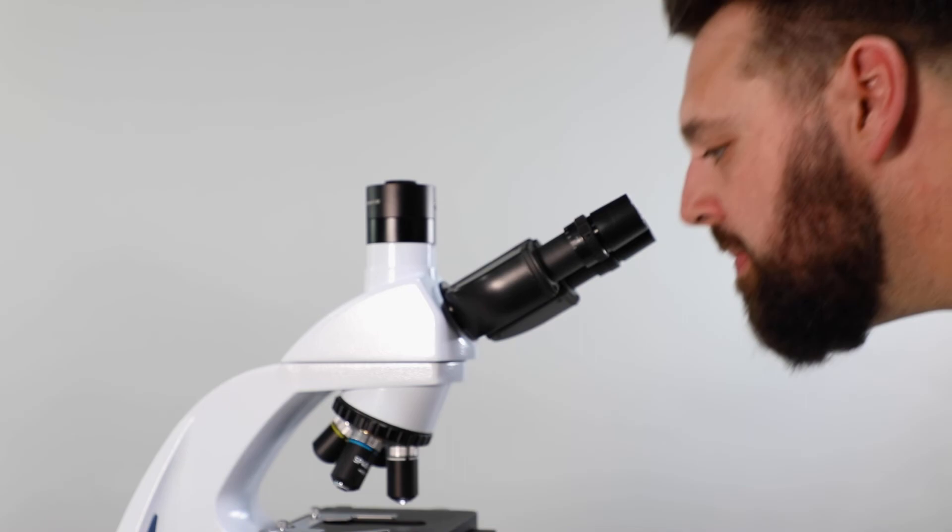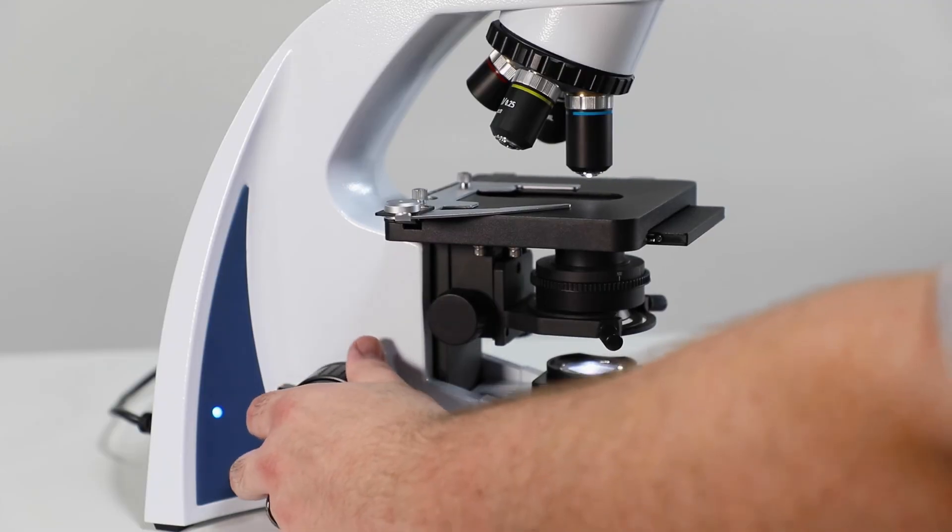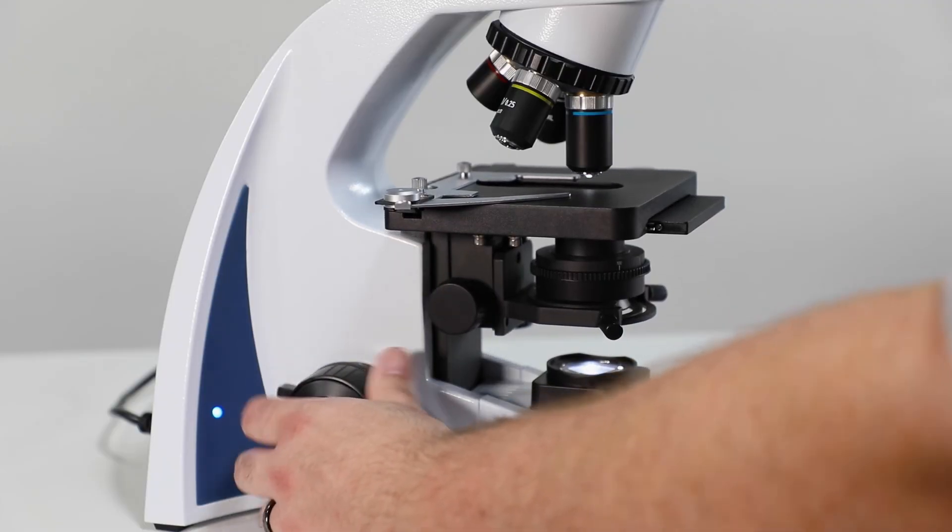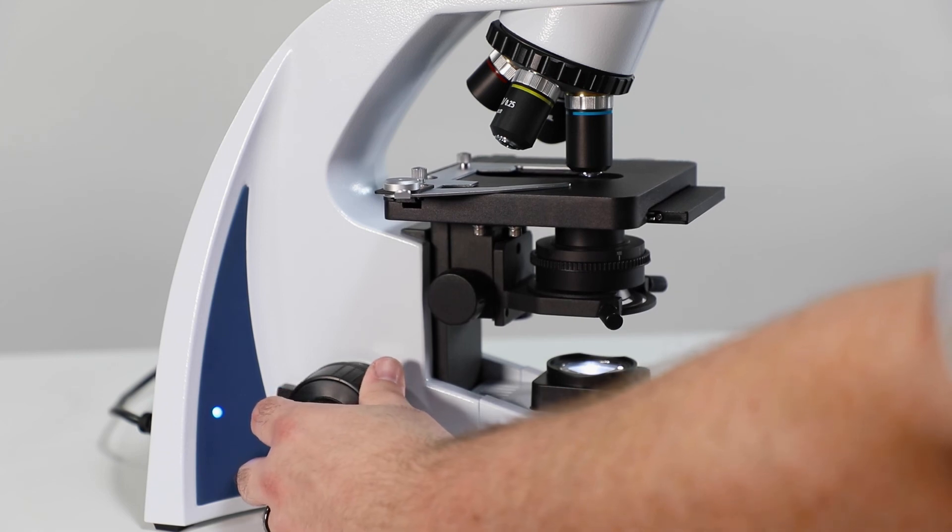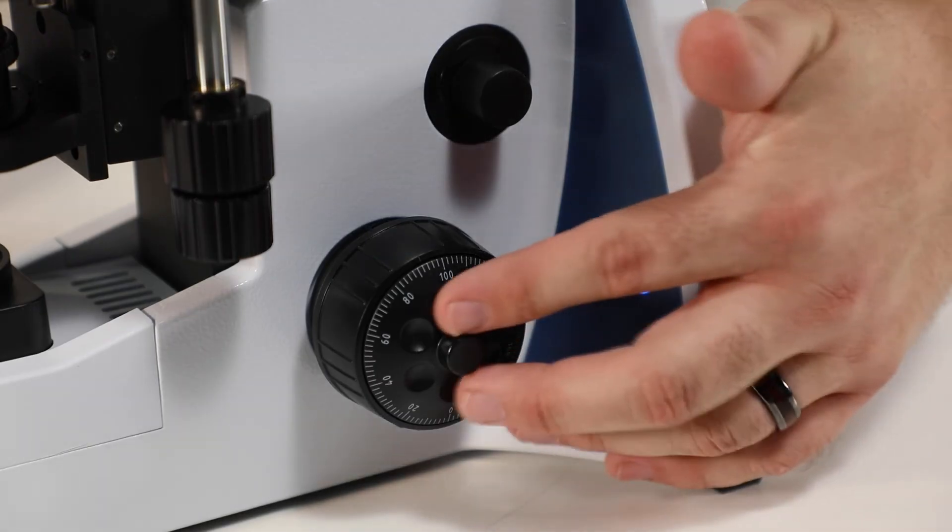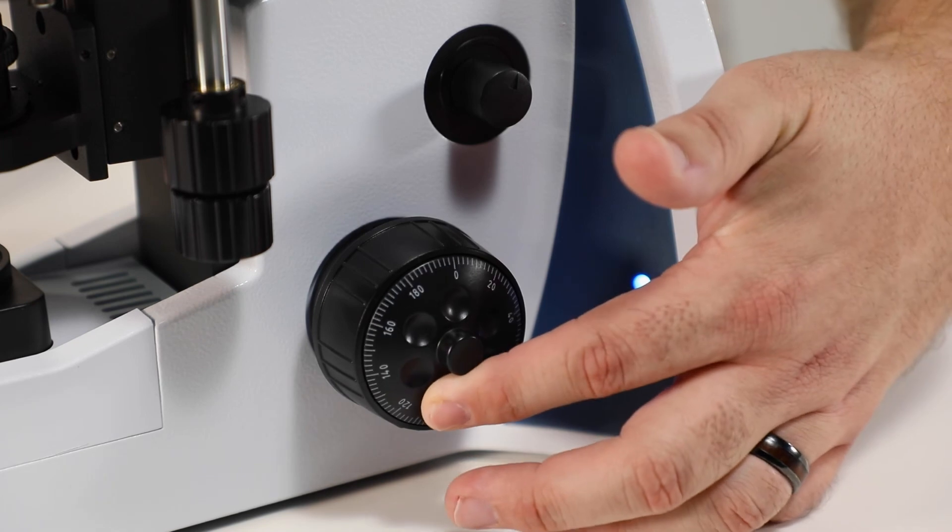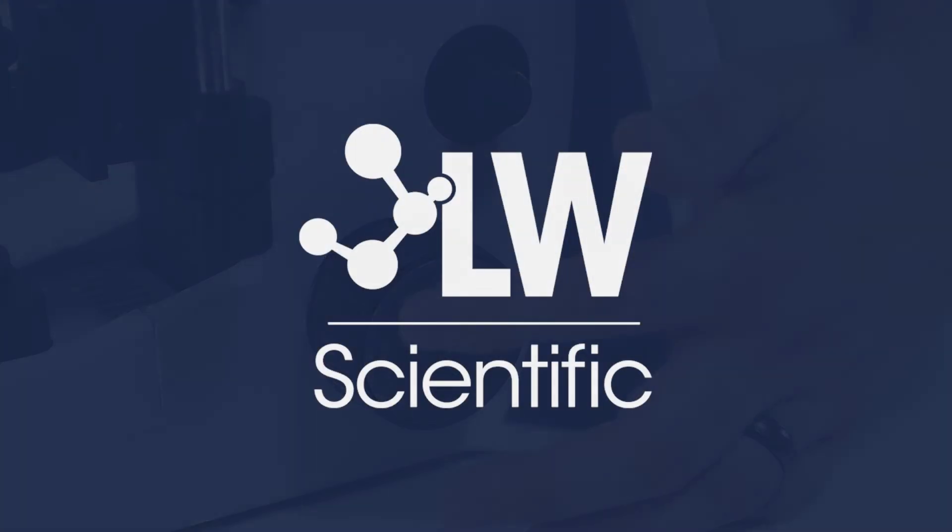While looking through the eyepieces, slowly turn the course adjustment knob away from you to raise the stage until your subject is as close to focus as possible in your eyepieces. Then use your fine focus knob to adjust the image until it's completely clear. Now your stage height is set and you're ready to go.